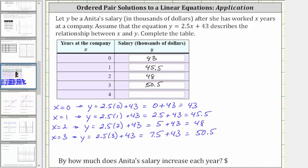In the last row, we are given x equals four. When x equals four, y equals 2.5 times four plus 43. 2.5 times four is 10, and 10 plus 43 equals 53. When x is four, y is 53.